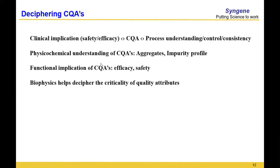CQA helps you to understand and design the process in such a way that it is consistent and in control. The whole aspect of CMC — chemistry, manufacture, and control — has the basis of its origin in CQA. From CQA you will eventually get your CPPs, the critical process parameters. Once you have a consistently controlled process, you will generate a consistently controlled and well-understood product. Unless you have a well-understood product, you will not be able to keep a tab on its safety and efficacy.